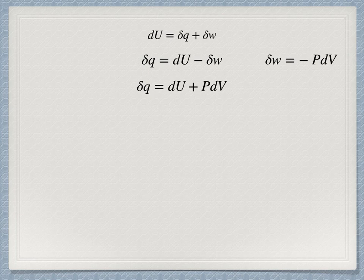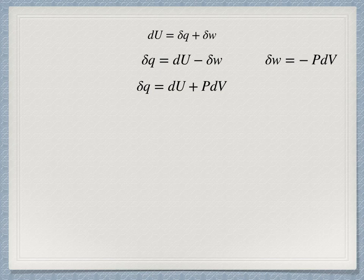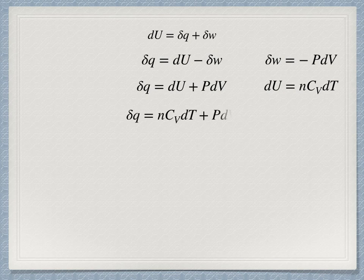Now the dU term comes from some heat capacity considerations. If the volume is constant, then no pV work can be done, and delta U is equal to q. A calorimetry experiment that measures a change in temperature but no volume change can relate the change in temperature to heat transfer and hence to the change in internal energy. We have dU is equal to nCv dT, where Cv is the constant volume heat capacity and n is the number of moles. This can be substituted to give delta q equals nCv dT plus p dV.